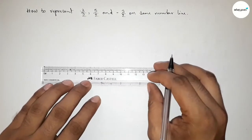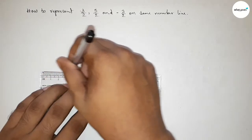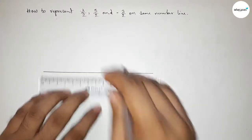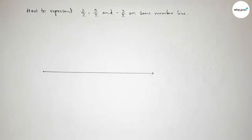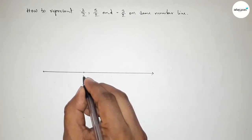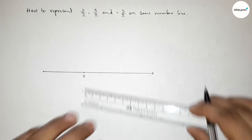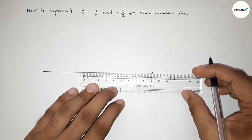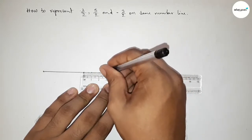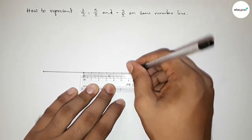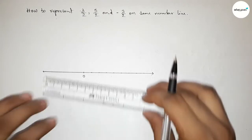First of all, we have to construct a number line. Drawing a line of any length and taking arrow marks on both sides. Now taking the starting number zero, then marking the numbers on the line using a scale — this is one, two, three, four, five, six.